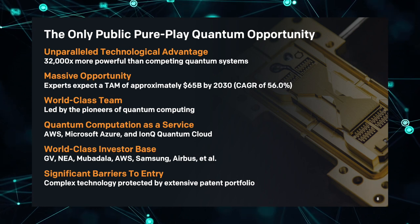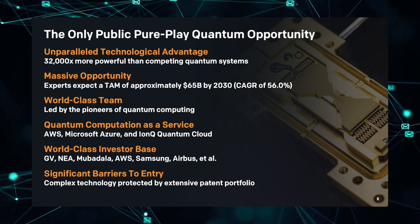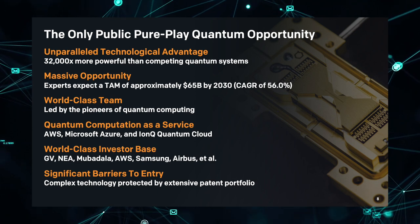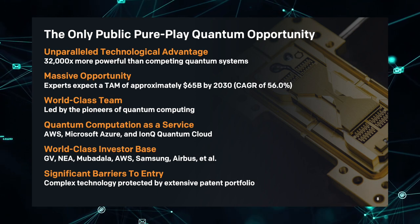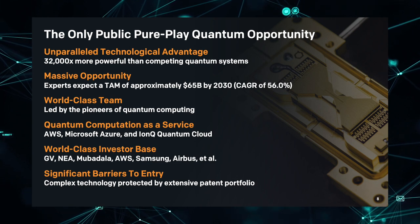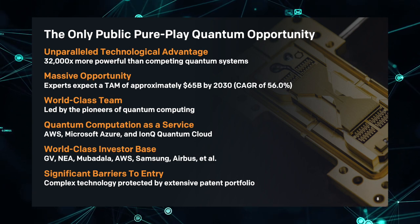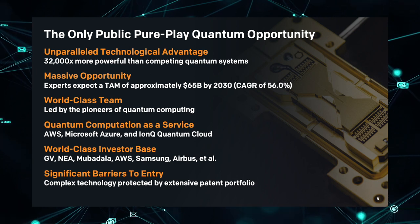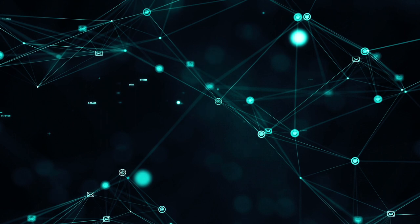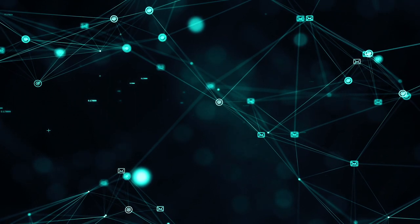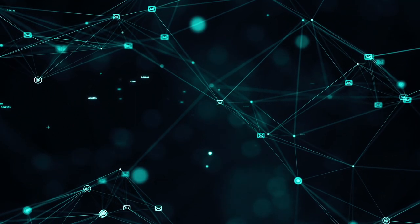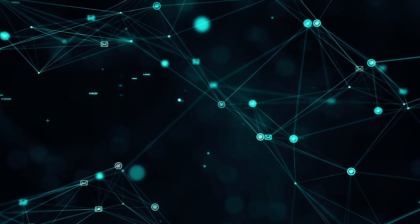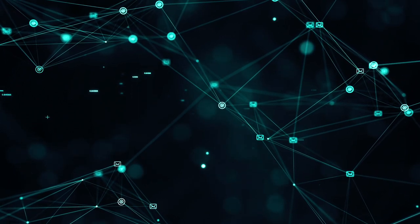As for the total addressable market, experts expect a TAM of approximately $65 billion by 2030, which is a compound annual growth rate of about 56%, which if they can actually pull that off, that's impressive. Part of their market plan is offering quantum computing as a service to companies like Microsoft and Amazon Web Services. Essentially, they're giving those companies access to their quantum computers for cloud services.